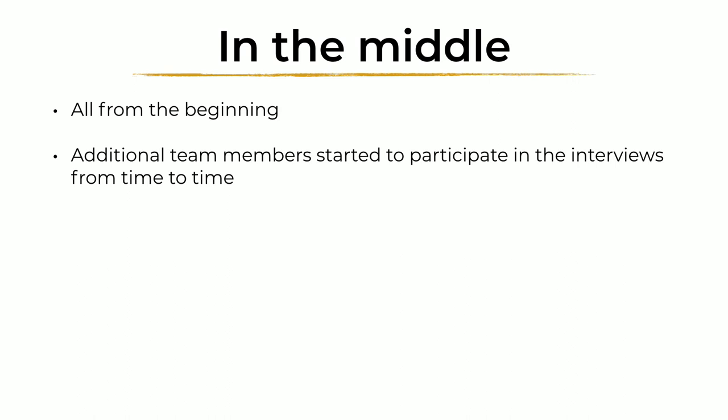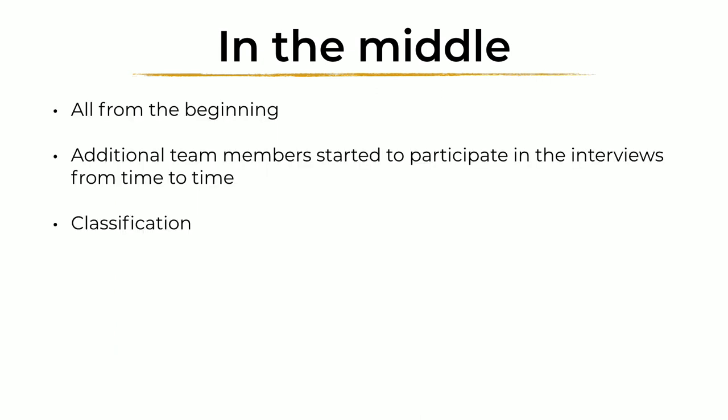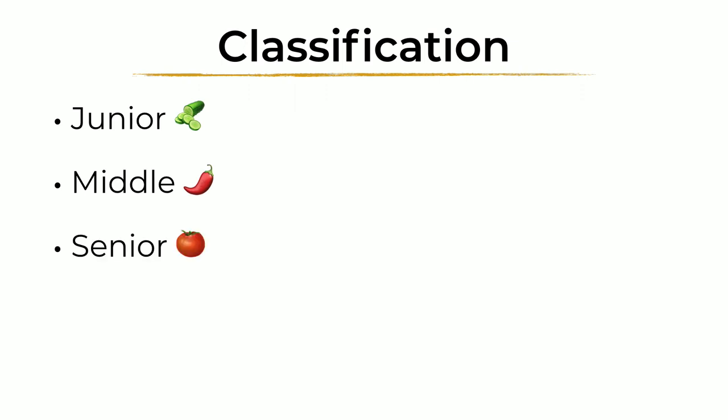Now we're approaching the middle phase. We kept all the original steps — the three-step process — but added additional team members to participate from time to time, because I was already overwhelmed. Another important thing we added was classification of candidates. All candidates were classified into juniors, middles, and seniors. We used emojis in our Slack channels to identify them.